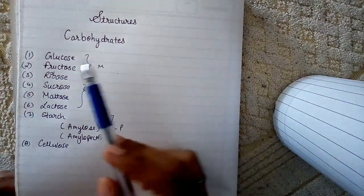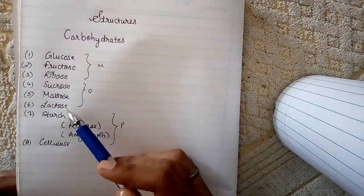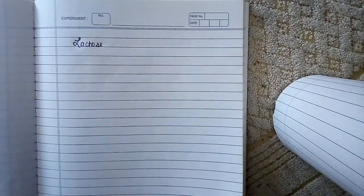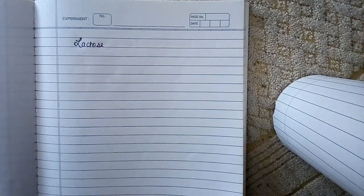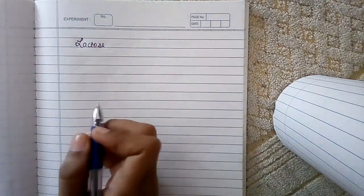Hey guys, so we are done with glucose, fructose, ribose, sucrose, and maltose. Now we will be doing lactose. So let's get started. Lactose is basically made of beta-D-galactose and beta-D-glucose. So let's draw first.